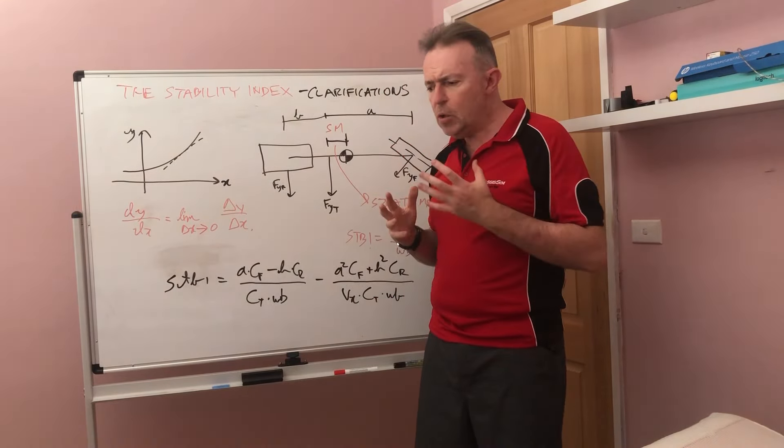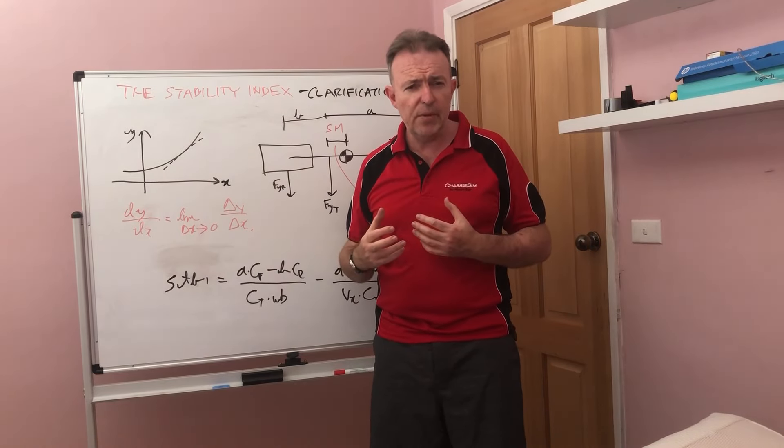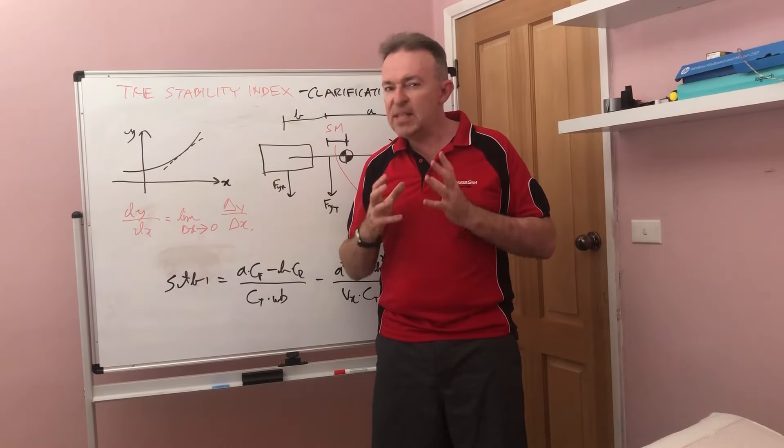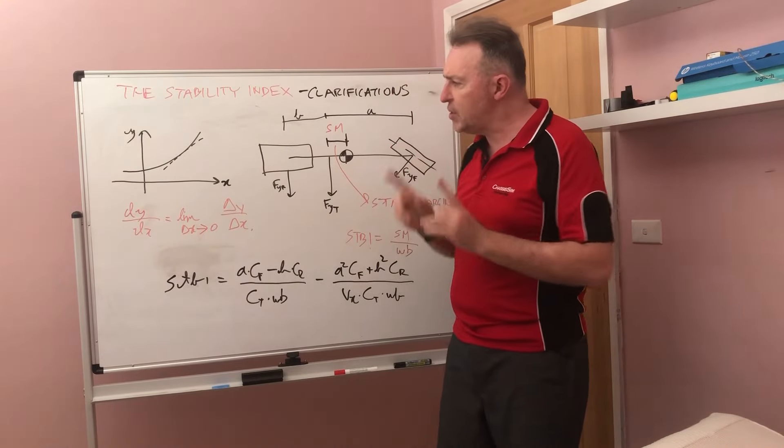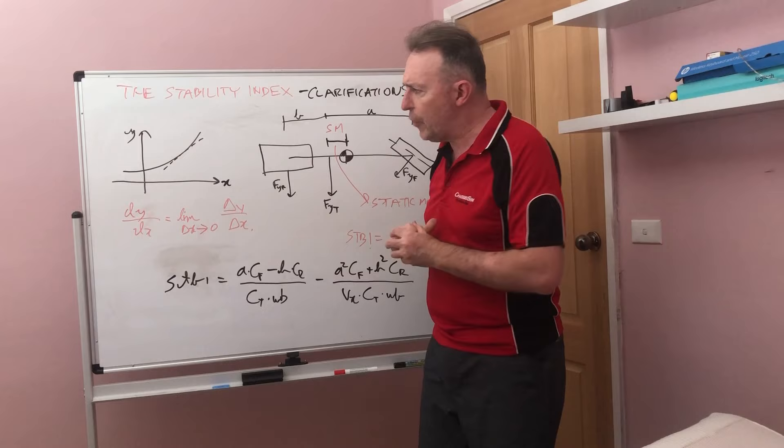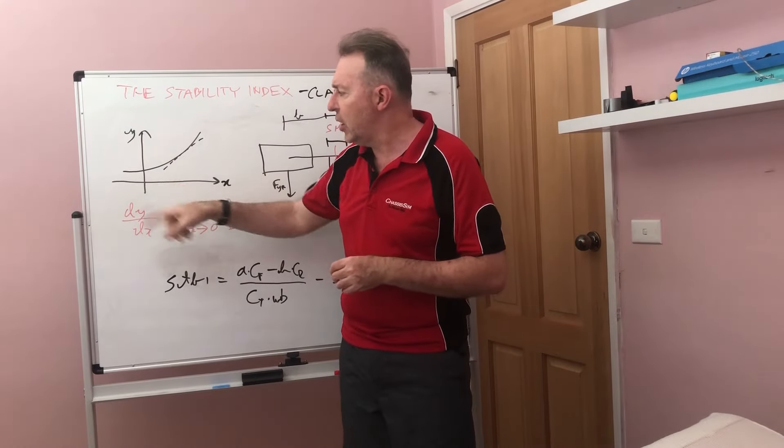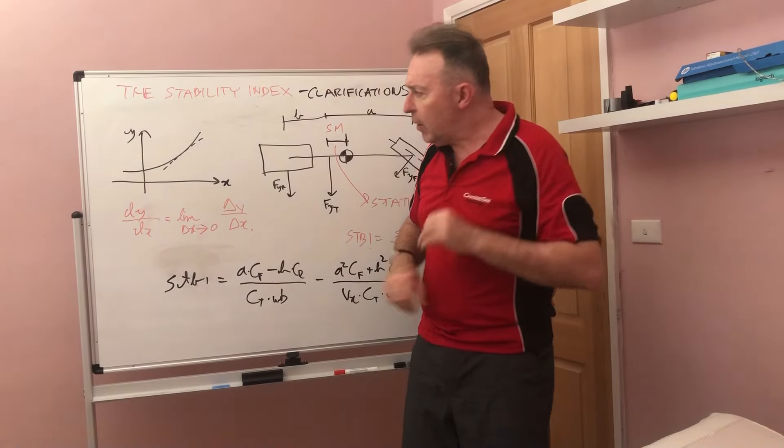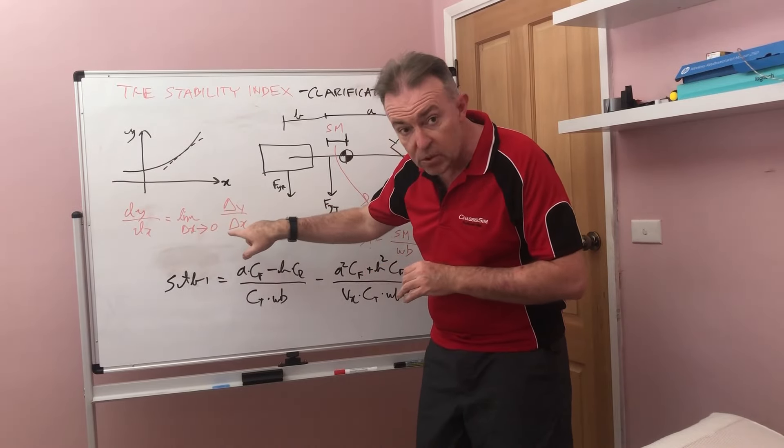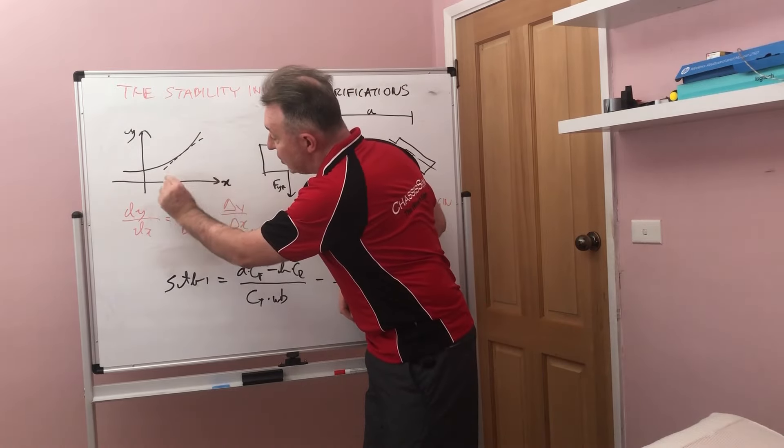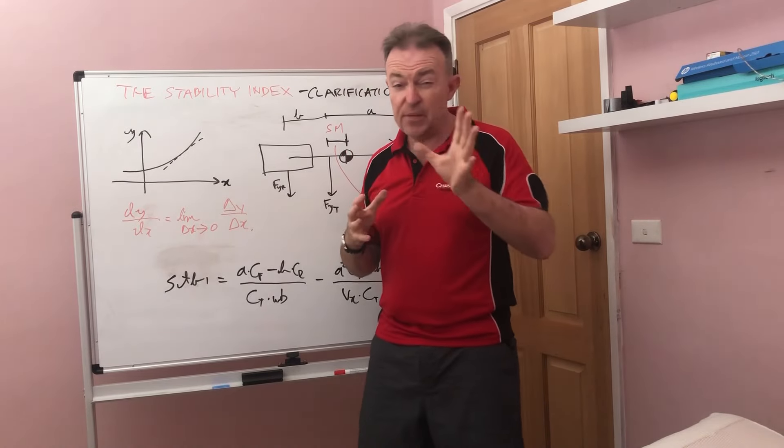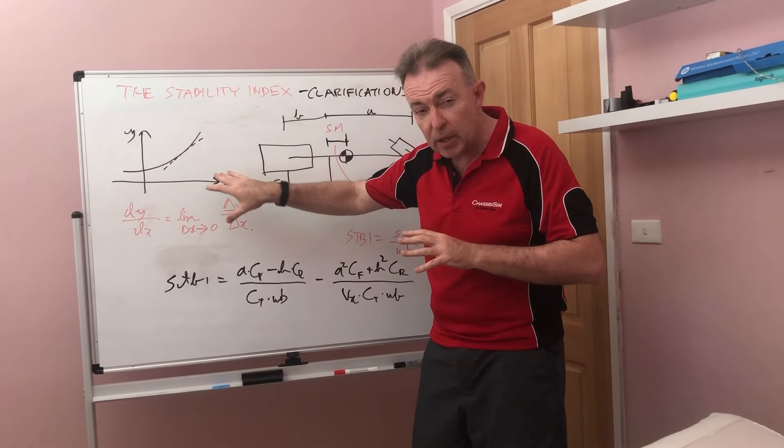What we're going to do today is walk you through a very quick introduction to the stability index. We'll go through some of these specifics so you can understand a bit more about where the numbers come from and how you derive them. To kick off the discussion, I want to start with some mathematical fundamentals. We've got our generic y versus x graph. The derivative of this is dy/dx, the limit as delta x approaches zero of delta y over delta x - the slope as that delta x approaches zero. We'll talk about the significance of this momentarily, but just park it for now.